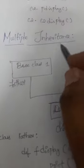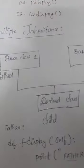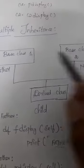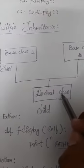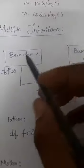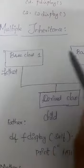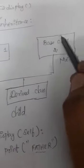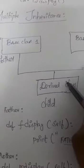The last inheritance you are going to see is multiple inheritance. Multiple inheritance means you can have more than one base class and only one derived class. In this example, I am having two base classes — base class 1 and base class 2 — and only one derived class.